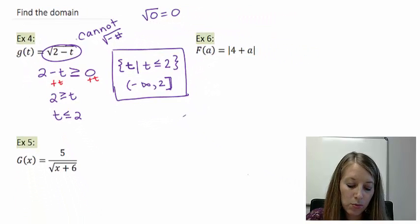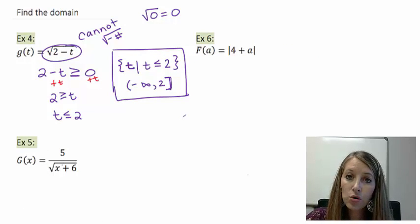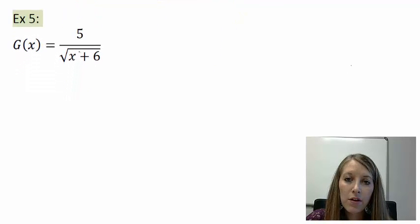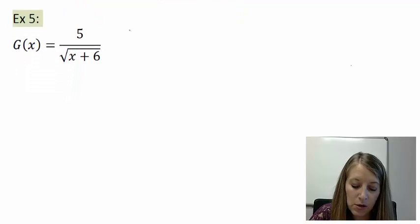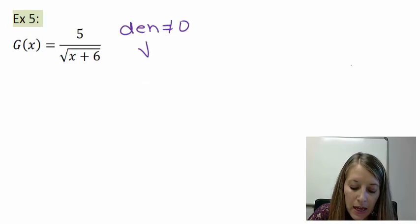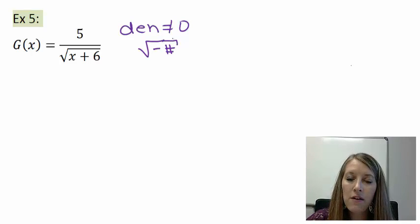We are going to use that knowledge to move on to example 5. I have two cautions in this problem. The first one is I know that I cannot divide by 0. My denominator cannot be coming out to be 0. And I cannot take square root of a negative number.